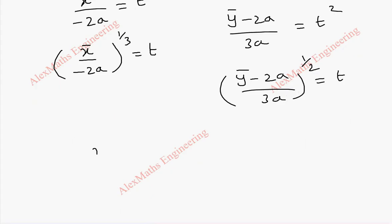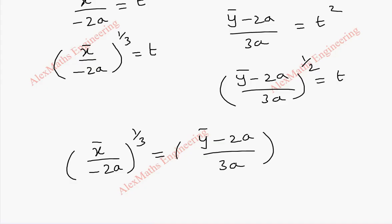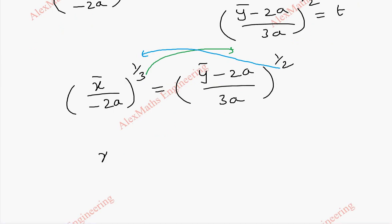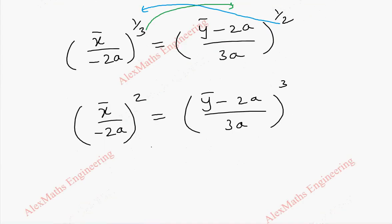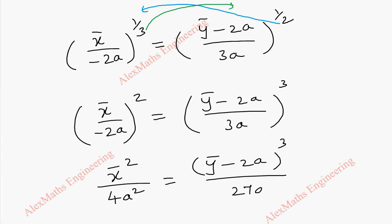Now we equate both expressions for t: (x-bar / minus 2a) to the power 1/3 equals (y-bar minus 2a / 3a) to the power 1/2. Raising both sides — the 3 goes as a cube and the 2 goes as a square — this becomes (x-bar / minus 2a)² equals (y-bar minus 2a / 3a)³.